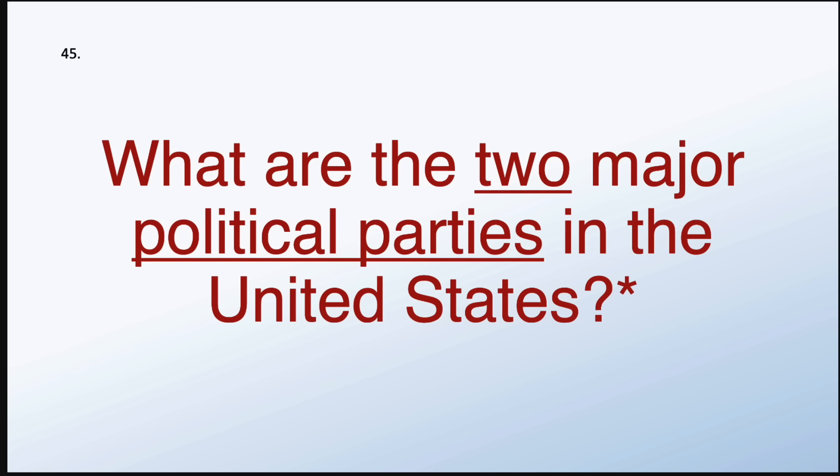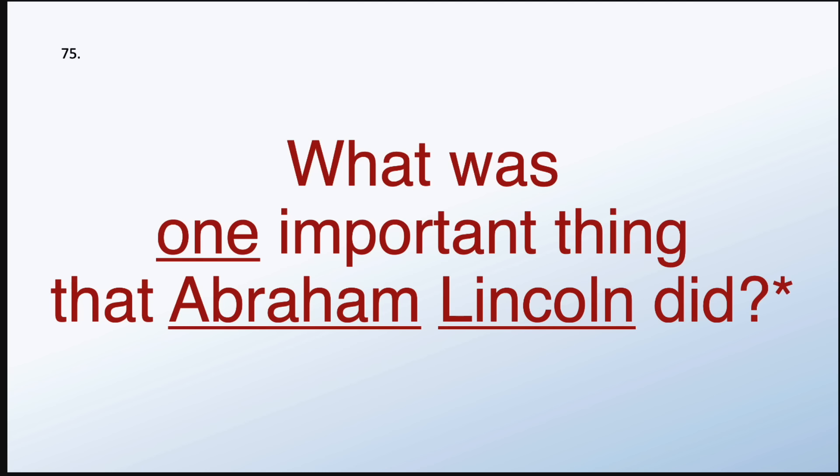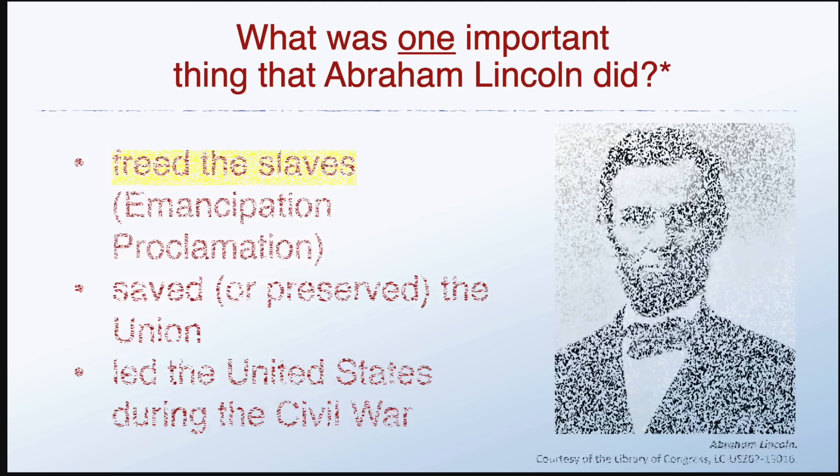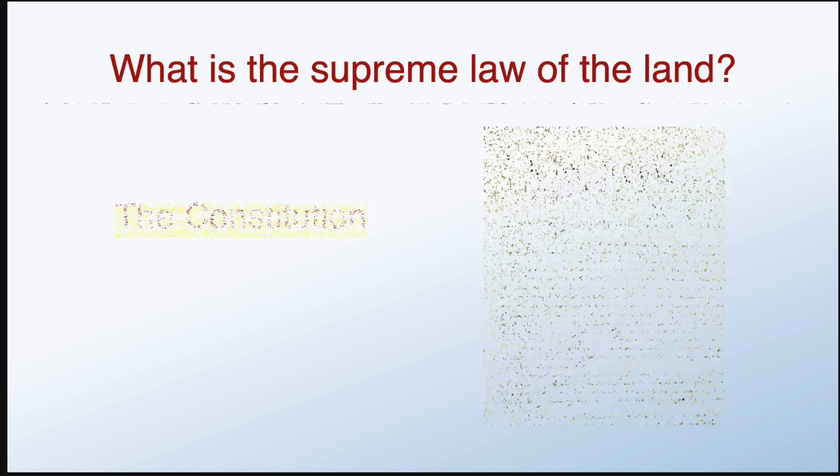What are the two major political parties in the United States? Democratic and Republican. What was one important thing that Abraham Lincoln did? Freed the slaves. What is the supreme law of the land? The Constitution.